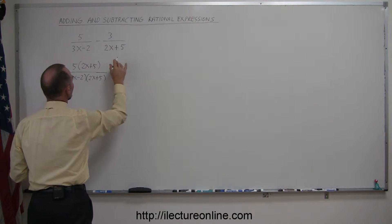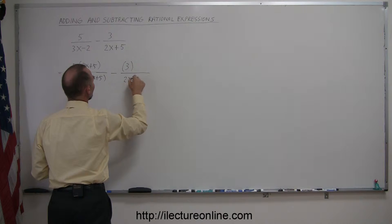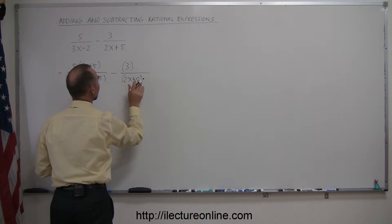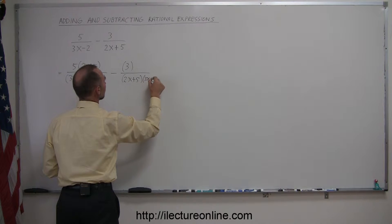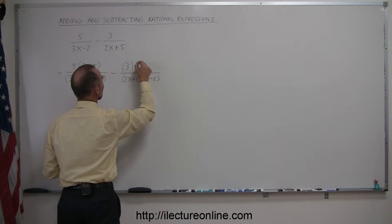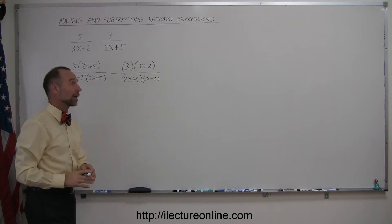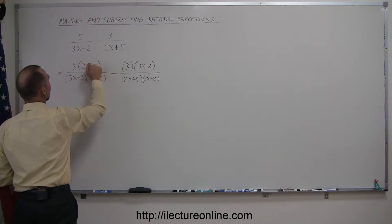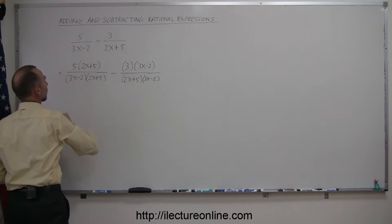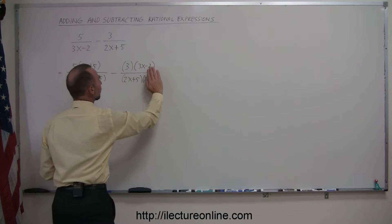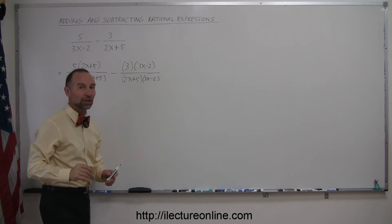Now we subtract from that this fraction right here: 3 divided by 2x plus 5. We're going to multiply this denominator by 3x minus 2, which means we have to multiply the numerator by 3x minus 2 as well. And always a good check is that if you were to cancel those out — since 2x plus 5 cancels with 2x plus 5 — you would end up with what you started with.